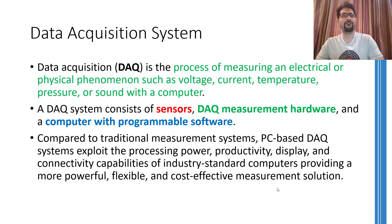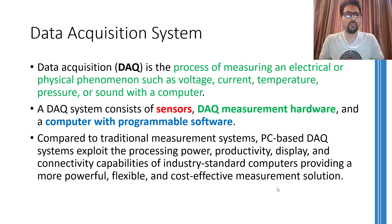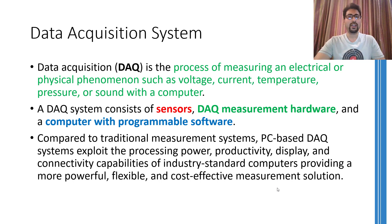Normally, for student projects and for many other projects as well, the computing power of a personal computer is exploited for performing the digital signal processing. The interface options, the processing power, display, storage capabilities and cost effectiveness are a few of the things that make personal computers a reasonable choice for implementing digital signal processing. However, dedicated processors are also sometimes used where a PC-based data acquisition system cannot be implemented.